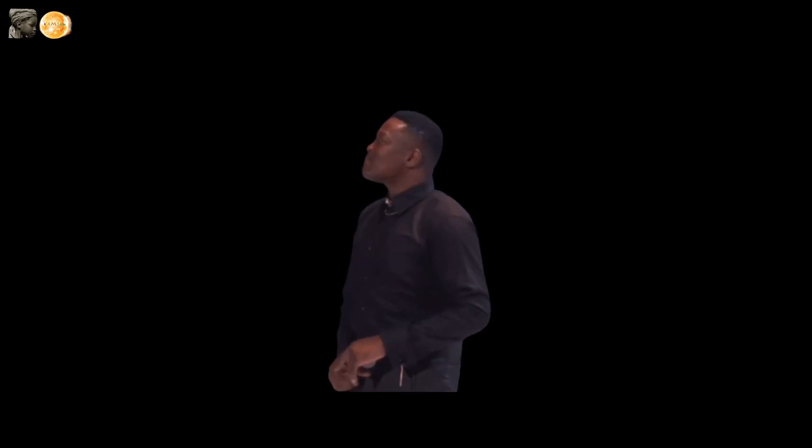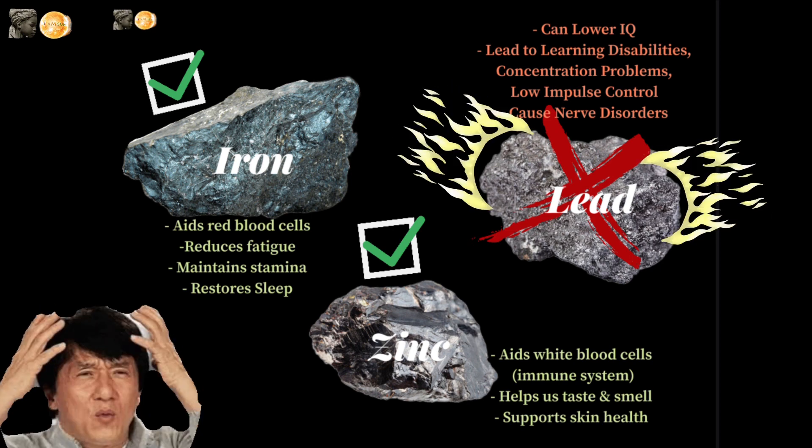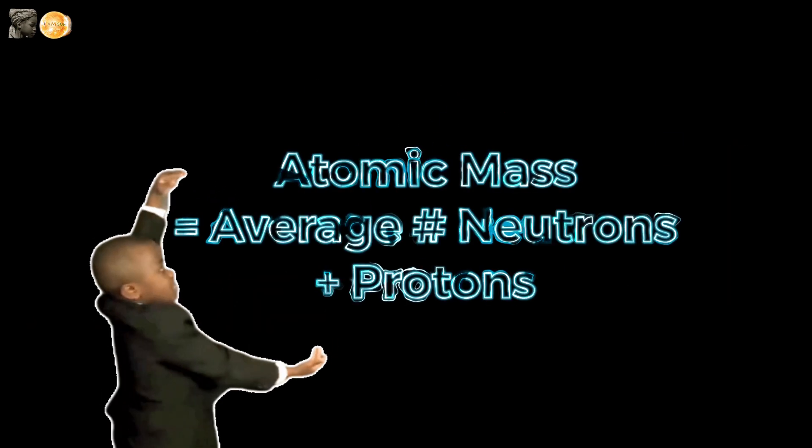So now that we understand isotopes and atomic mass, let's go back to that question from that last video. What makes lead so poisonous to our brains compared to the healthy zinc, iron, or calcium? The answer lies in its atomic mass. Check it out.